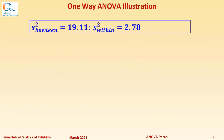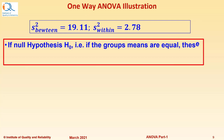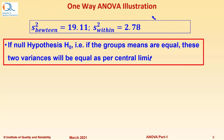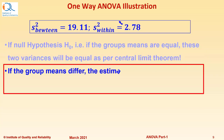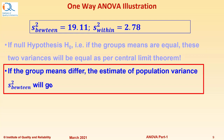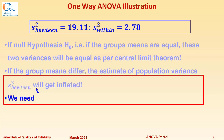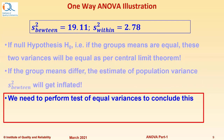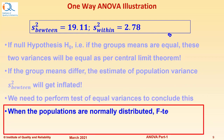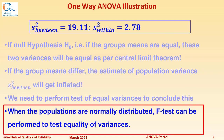So we have calculated S-squared-between as 19.111 and S-squared-within as 2.78. If the null hypothesis is true — that is, if the group means are equal — these two variances will be equal as per Central Limit Theorem. If the group means differ, the estimate S-squared-between will get inflated. We need to perform a test of equal variances to conclude this. When the populations are normally distributed, the F-test can be performed to test equality of variances.